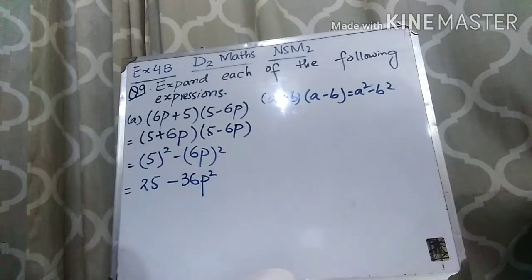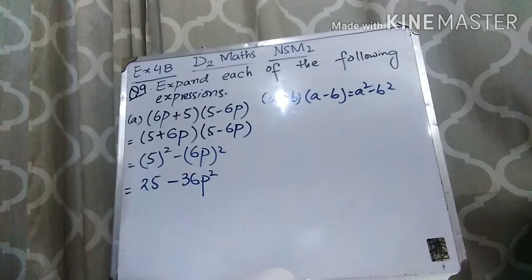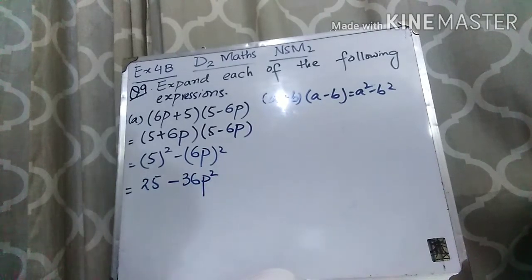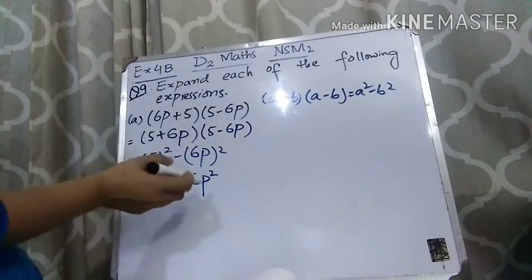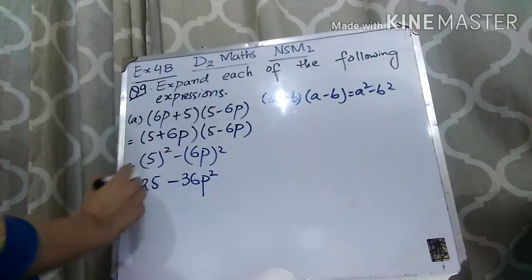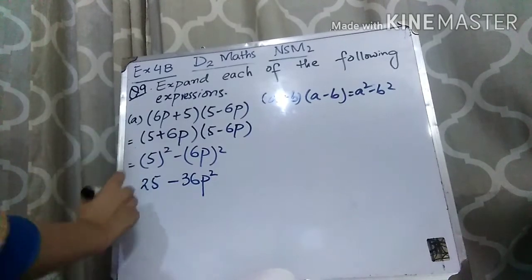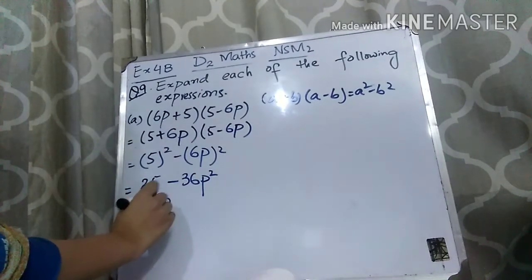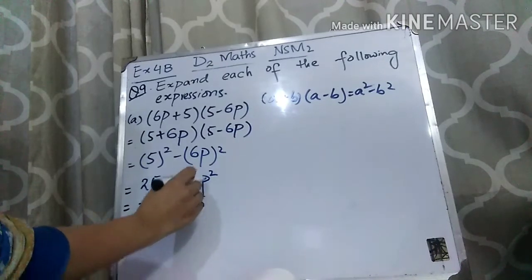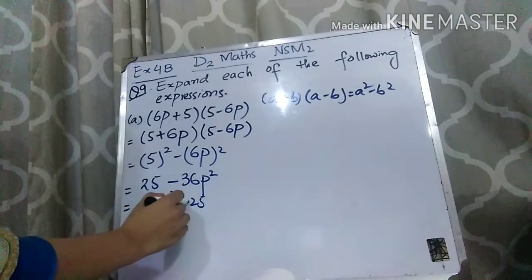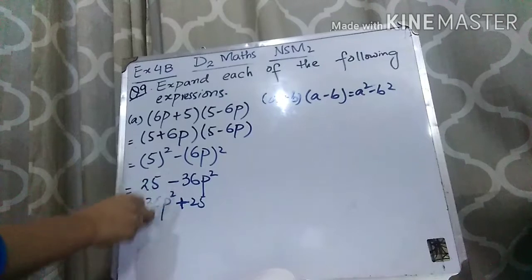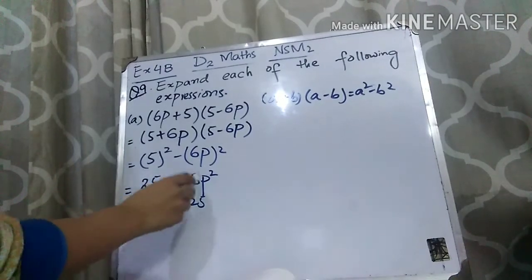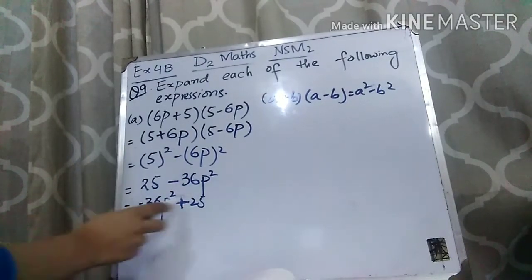I hope that this question is clear to you. You can also write this answer as minus 36P squared plus 25. You can write the variable first and then the constant. If you are not writing the answer in this form, it is also right — both forms are correct. You can write down the answer in either way.